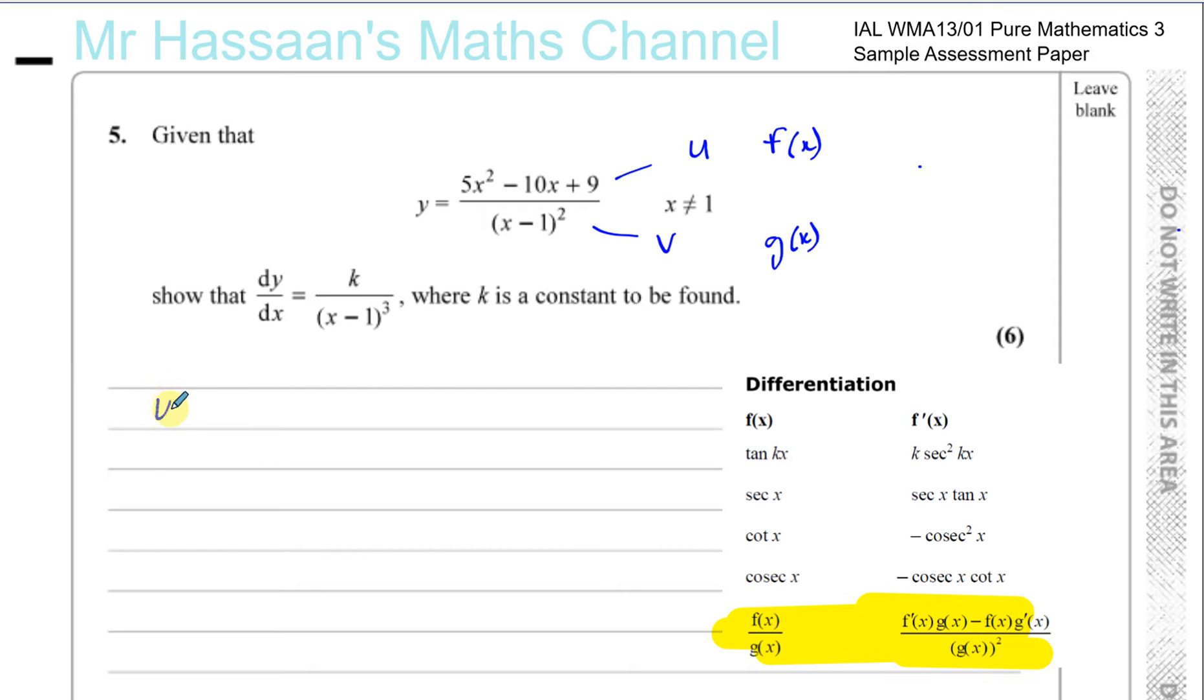So what I'm going to do is write down u equals 5x squared minus 10x plus 9, and v equals x minus 1 squared. And underneath u, I'm going to write down the differential of u, which is u dash, which is going to be 2 times 5, which is 10x minus 10, which I'm going to write as 10 times x minus 1. And the differential of x minus 1 squared, we could use chain rule for this, which is pretty simple: multiply by the power, take 1 from the power, and multiply by the differential of what's inside the function, which is 1. So you end up with 2 times x minus 1.